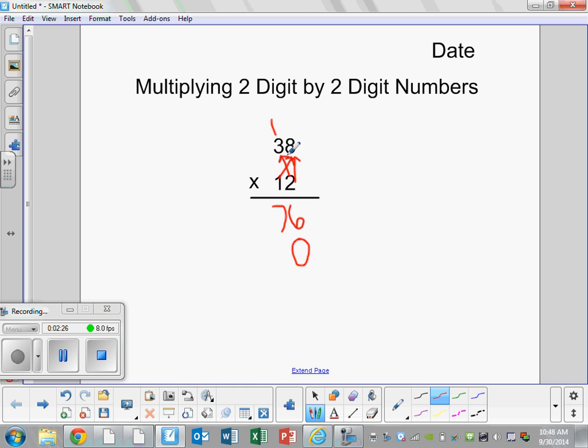And when I take 1 times 8 I get 8 or 10 times 8 I get 80. Then I'm going to take that 1 and I'm going to multiply it here by this 3. 1 times 3 is 3. So I'm going to put my 3 down here.